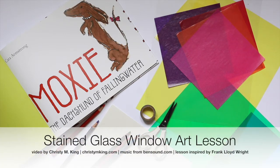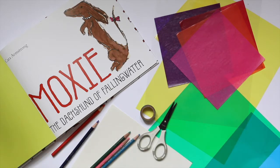Today I'm going to share a lesson inspired by the stained glass windows of Frank Lloyd Wright. I love using this children's book, Moxie, by Kara Armstrong, which is from the perspective of a little dog and goes through one of the properties that Frank Lloyd Wright designed, just to give the kids an introduction to him and his work as an architect. Then I like showing them examples of his stained glass windows.